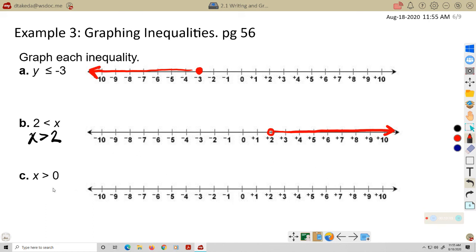And then x is greater than 0, and that's pretty much just like that last one, the boundary at 0, open circle, it's not equal to 0, and x is greater, where are the numbers greater than 0? Well, those are all the positive numbers, so we're going to graph to the right. Okay, so get these into your notes, and if you need to pause it, do that.